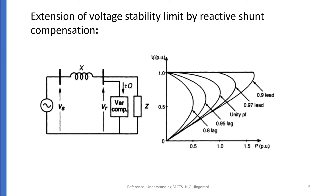Extension of voltage stability limit by reactive shunt compensation: here we can see the same radial line is being given compensation at the load end. We can see the change in the PV graph obtained due to this shunt compensation provided at the load end, and we can see that the stability margin is increased.